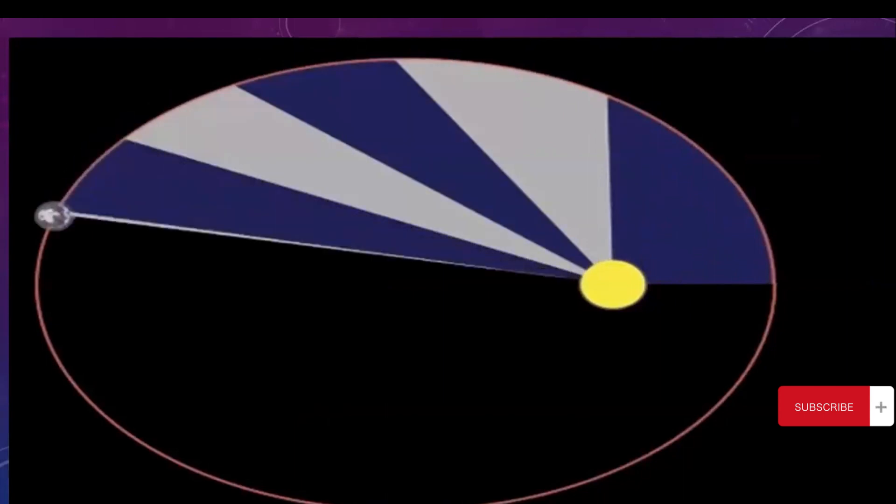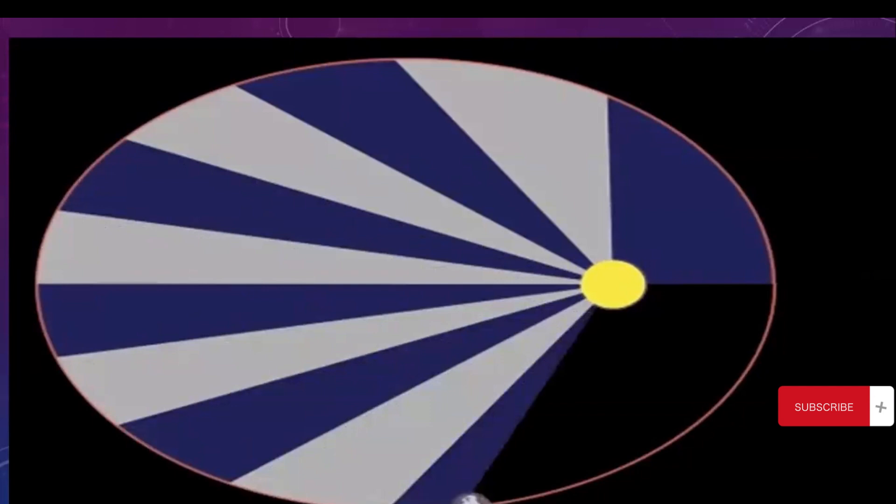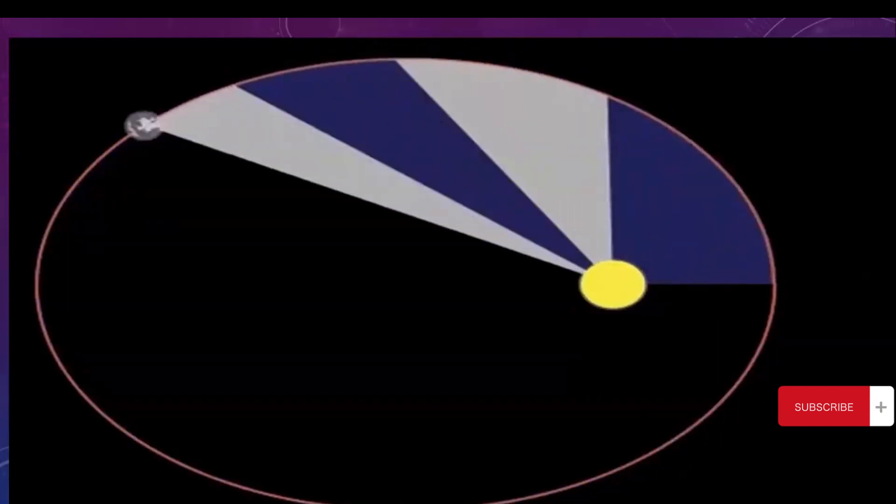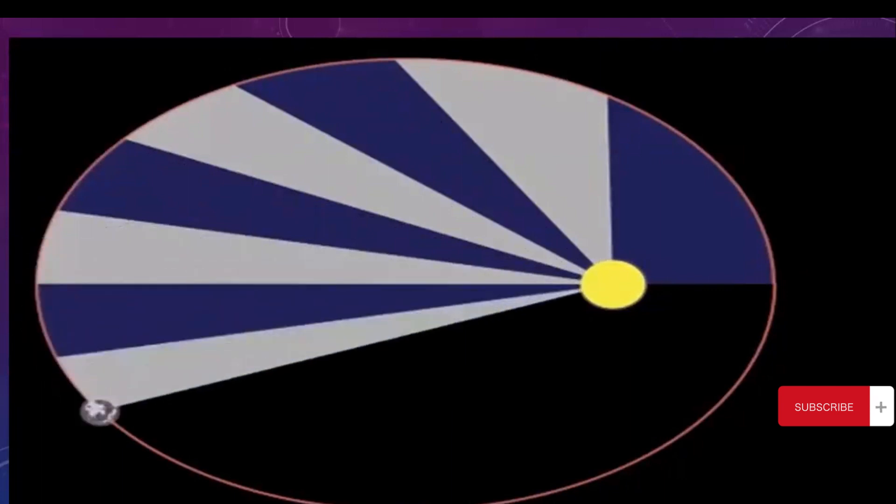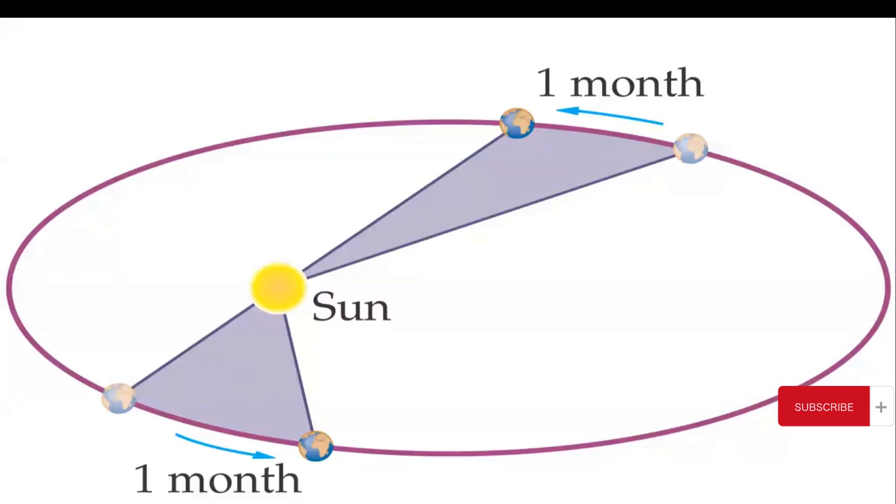In practical terms, this means that a planet travels faster when it is closer to the sun, that is at perihelion, and when it is farther away from the sun, it goes slower. So in a given period of time, the area swept by the planet is the same.